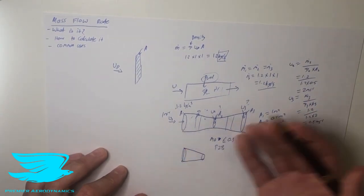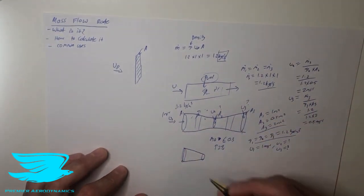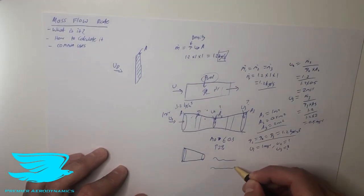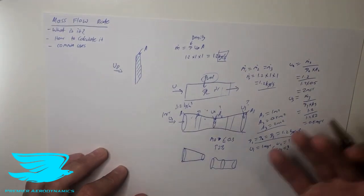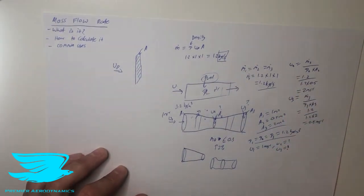Or it could just be diverging. It could be anything, really. It could be like a wiggly one. And you can figure out still the mass flow rates at each one of these points, the velocities, the areas, whatever. So that's the mass flow rate.